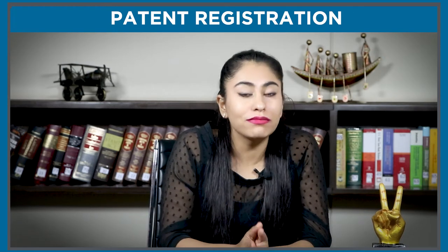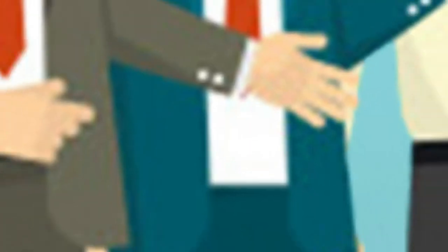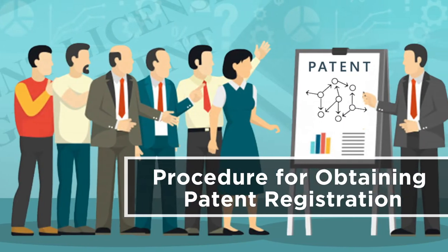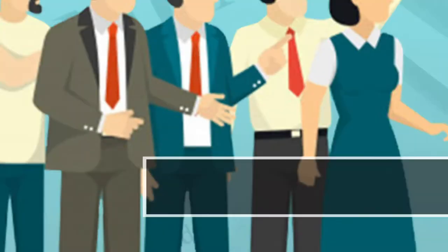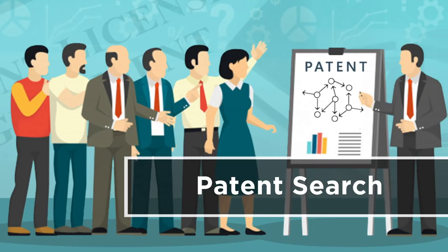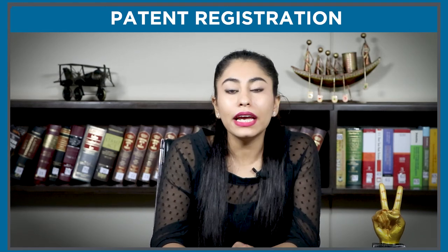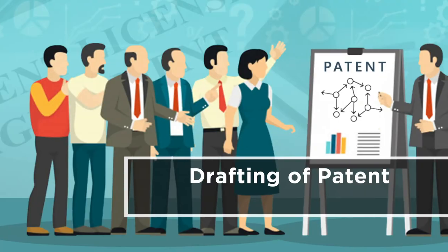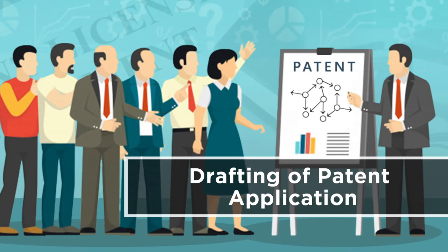Now let's understand the procedure for patent registration. The very first step is conducting a patent search, which will help the applicant learn whether a patent of similar nature is already registered or not. Once you have completed the search, drafting of the application will be carried out.